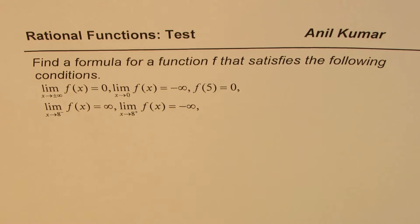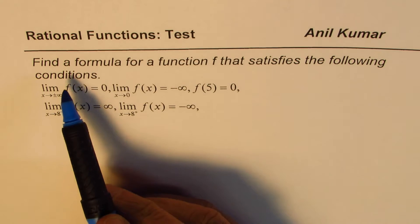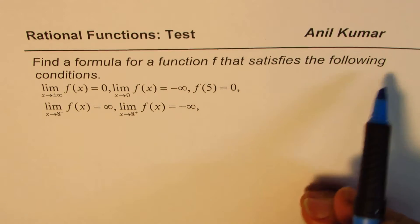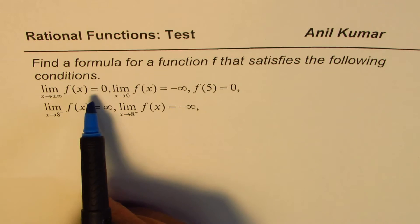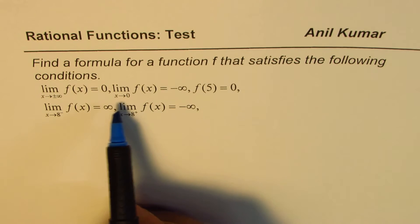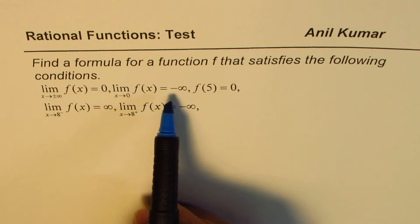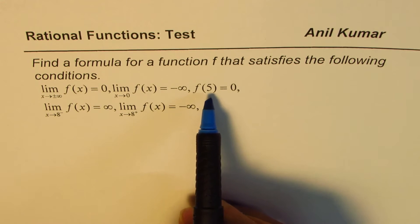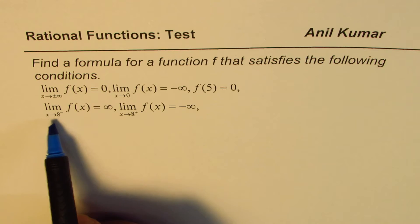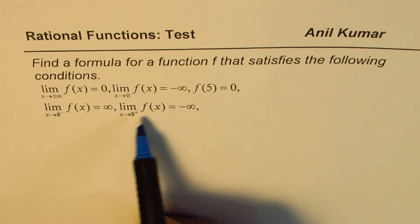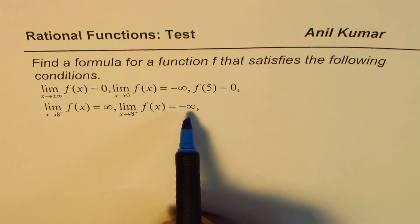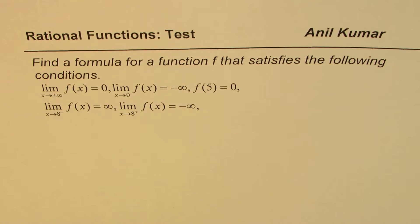I'm Anil Kumar, sharing with you a very important test question on rational functions. The question here is: find a formula for a function f that satisfies the following conditions. Limit when x approaches plus and minus infinity for the function is 0. Limit when x approaches 0 for the function f of x is minus infinity. The value of the function at 5 is equal to 0. You can pause the video, answer the question, and look into my suggestions.